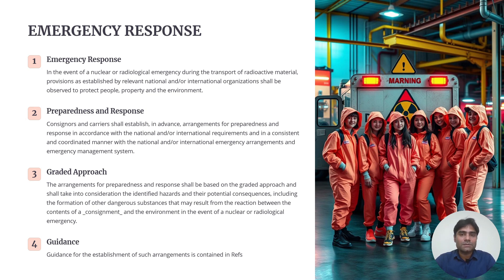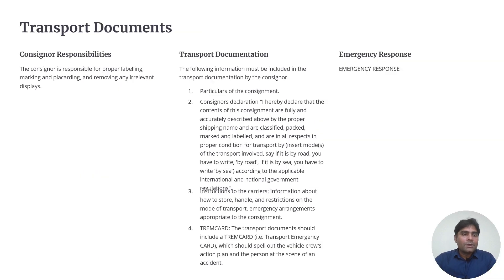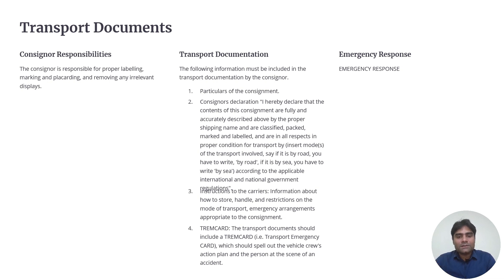That should be retained on the transport document, which should contain the transport index and should have the name of the consignors and documents which include the consignment declarations, instructions to the carriers, and the transport emergency card. If there is any emergency, it should be spelled out in the vehicle crew action plan so that the person at the scene of the accident knows what responses should be followed.